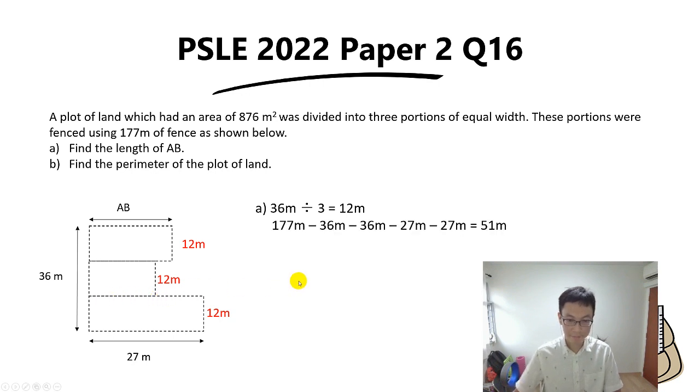So if you do that, if you take 177 minus 36 minus 36 minus 27 minus 27, you get 51 meters. Can you make a guess what 51 meters stands for? It's basically two times AB, because you minus everything, you're left with this and this.